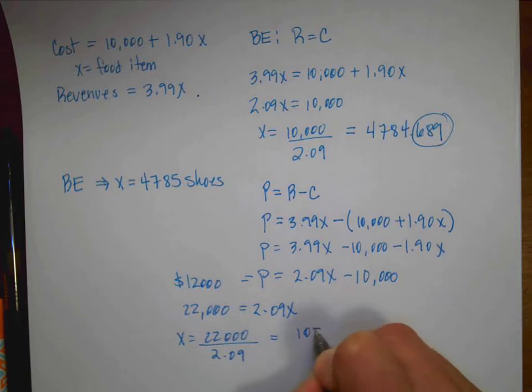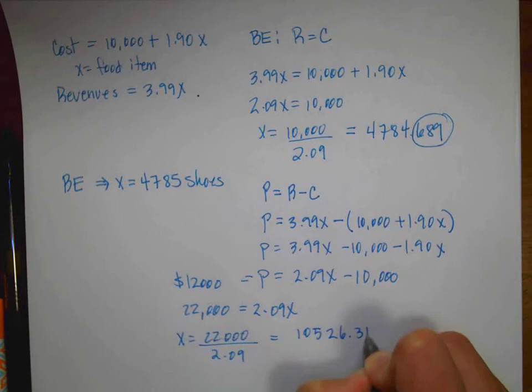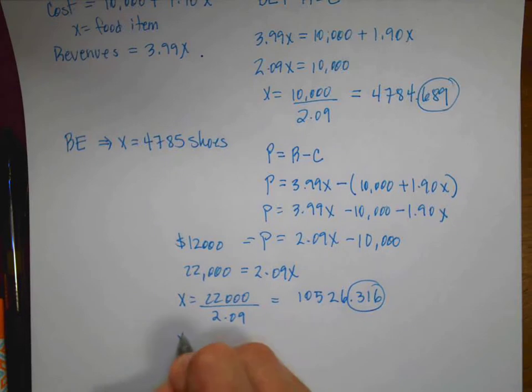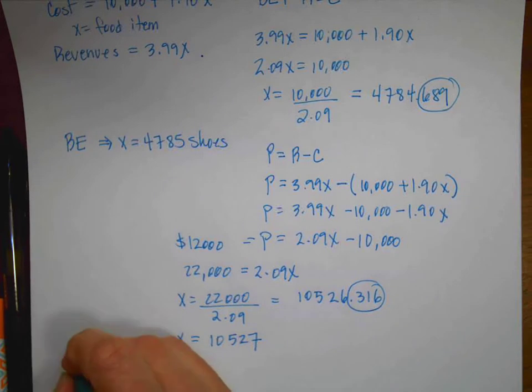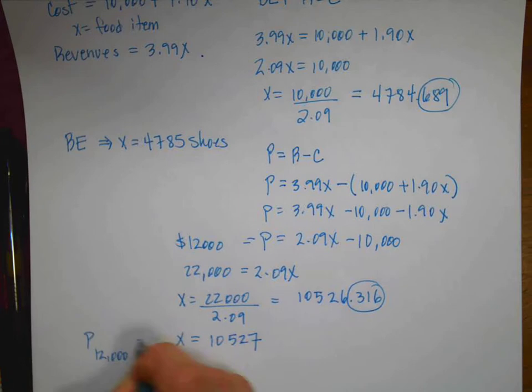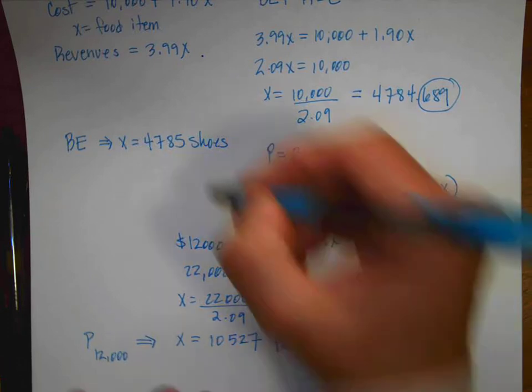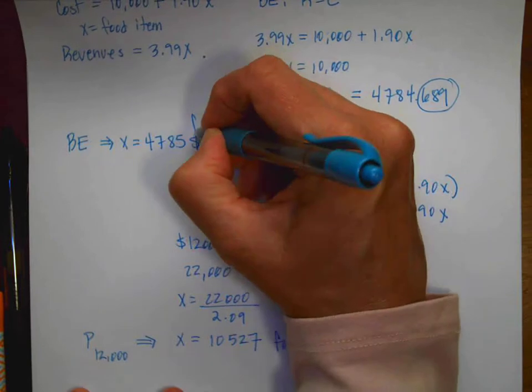And this is a funny number. 10,526.316. Remember, 0.316 of a food item would be kind of gross. So I'm going to round off. 10,527. So for a profit of $12,000, I have to sell 10,527 food items.